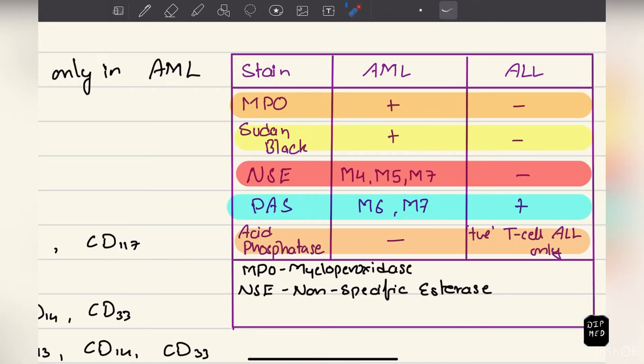Now onto the cytochemistry: here I've drawn a table where I've included different stains and compared AML with ALL. Myeloperoxidase is taken up only by myeloblasts, so it's positive in AML and negative in ALL. Sudan black: positive in AML, negative in ALL. Non-specific esterase is positive in AML but only in M4, M5, and M7 classes. These are FAB classification of AML which we'll study later. It's negative in ALL. PAS is positive in ALL but negative in AML except for M6 and M7. Acid phosphatase is negative in AML and positive in ALL but only in T-cell ALL.